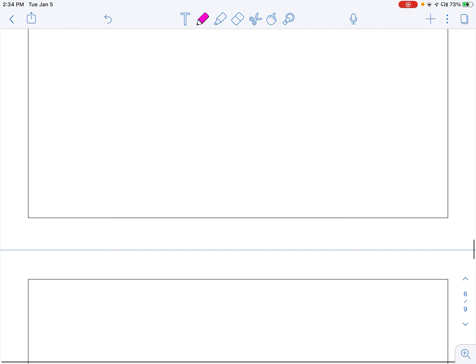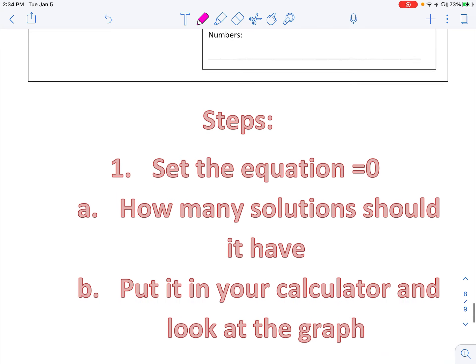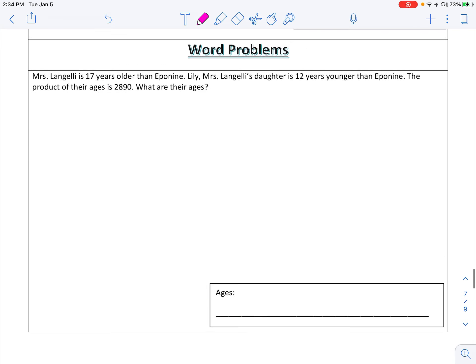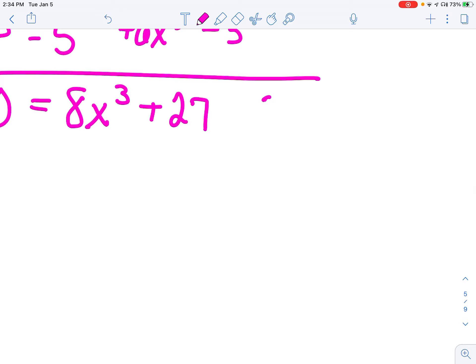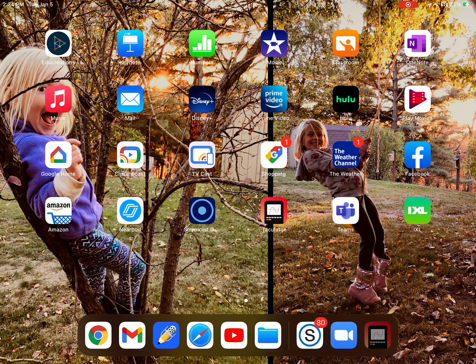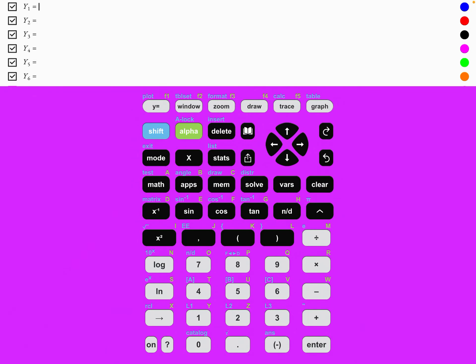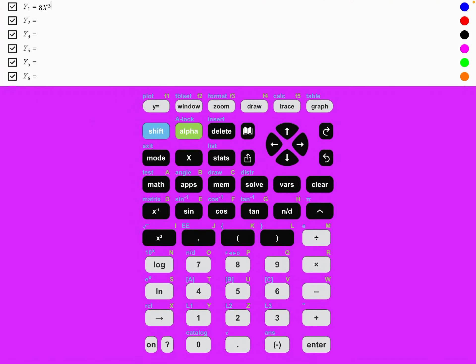If you scroll through the notes, you are going to notice that step one is set it equal to zero, decide how many solutions it should have, put it into your calculator and look at the graph. So I see that it's x cubed, so it should end up having three solutions. I'm going to follow my steps and put it in my calculator. Remember, you have to get it equal to zero first. So clear this out. It was 8x to the third and was it plus 27 or minus 27? Plus 27. And I'm going to hit graph.